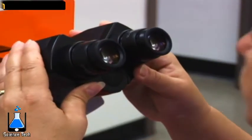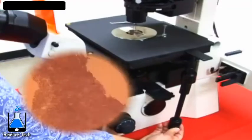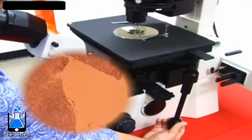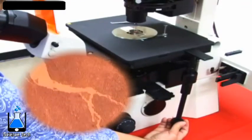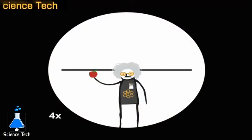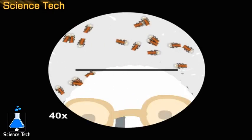Then, locate the area of interest by looking through the eyepieces while adjusting the knobs to move the slide in the X and Y directions. The size of the field of view will decrease drastically as you move from a low magnification to a higher magnification.